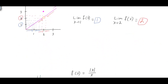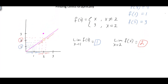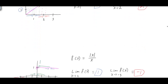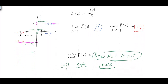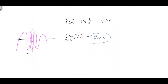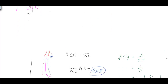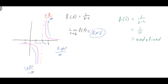To quickly review: graphically, all you have to do is look from the left and from the right and see what number you're approaching. There are three main categories where the limit does not exist. First, if you approach a number from the left and right and get two different values, the limit does not exist. Second, if your graph is oscillating between two different values, the limit does not exist. Third, if your graph is increasing or decreasing without bound — going to infinity or negative infinity — the limit does not exist.